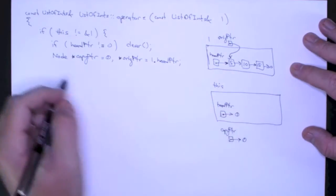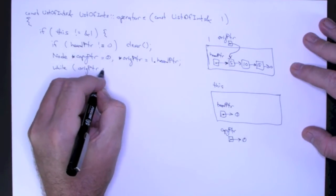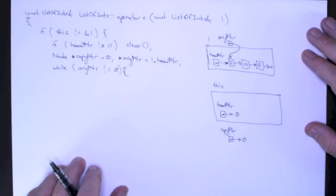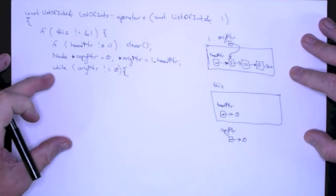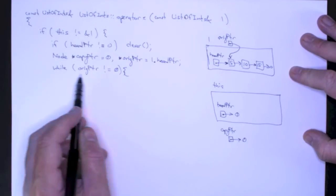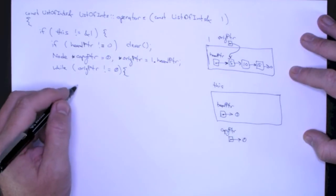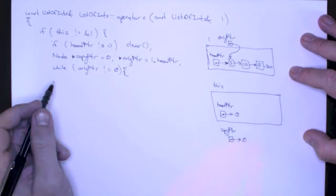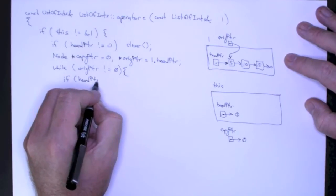I'm going to do a traversal — keep making a copy as long as original pointer is not equal to null. You'll see when I write this code out that it's going to look almost identical to the read method at this point. I've got two situations: either an empty list, or copy pointer pointing to the end of the list. To check if it's empty, I check if head pointer is equal to null.